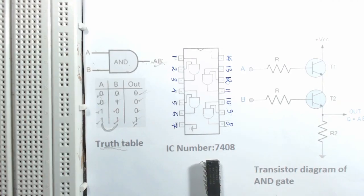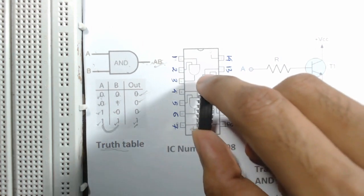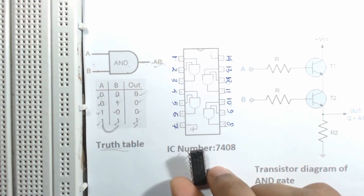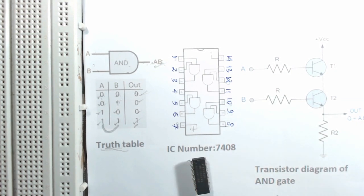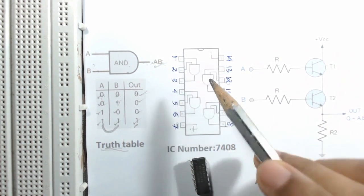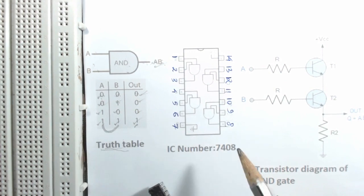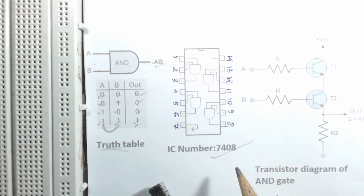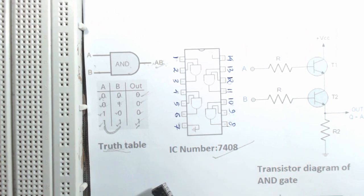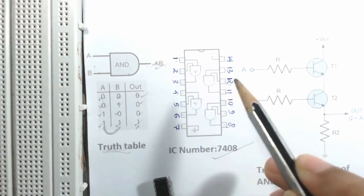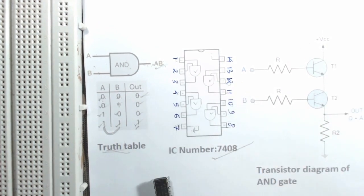In the market, AND gates are available as integrated circuits. An AND gate can also be implemented using diodes, transistors, etc. Here is a diagram of an AND gate IC. Every IC has its own number. The number of the AND gate IC is 7408. In an AND gate IC, we can see there are 4 AND gates.